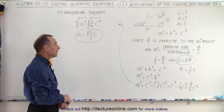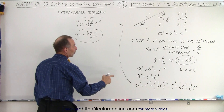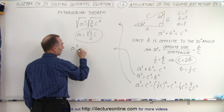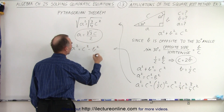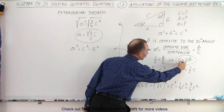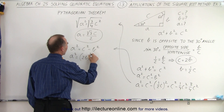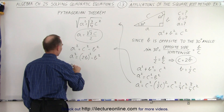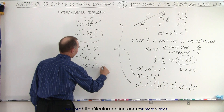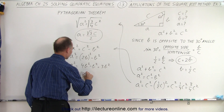We can also find a relationship between a and b. Starting again with a squared equals c squared minus b squared, instead of replacing b in terms of c, we write c in terms of b: c equals 2b. That means a squared equals the quantity 2b, squared, minus b squared, which is 4b squared minus b squared, equal to 3b squared. Taking the square root of both sides, a equals the square root of three times b.